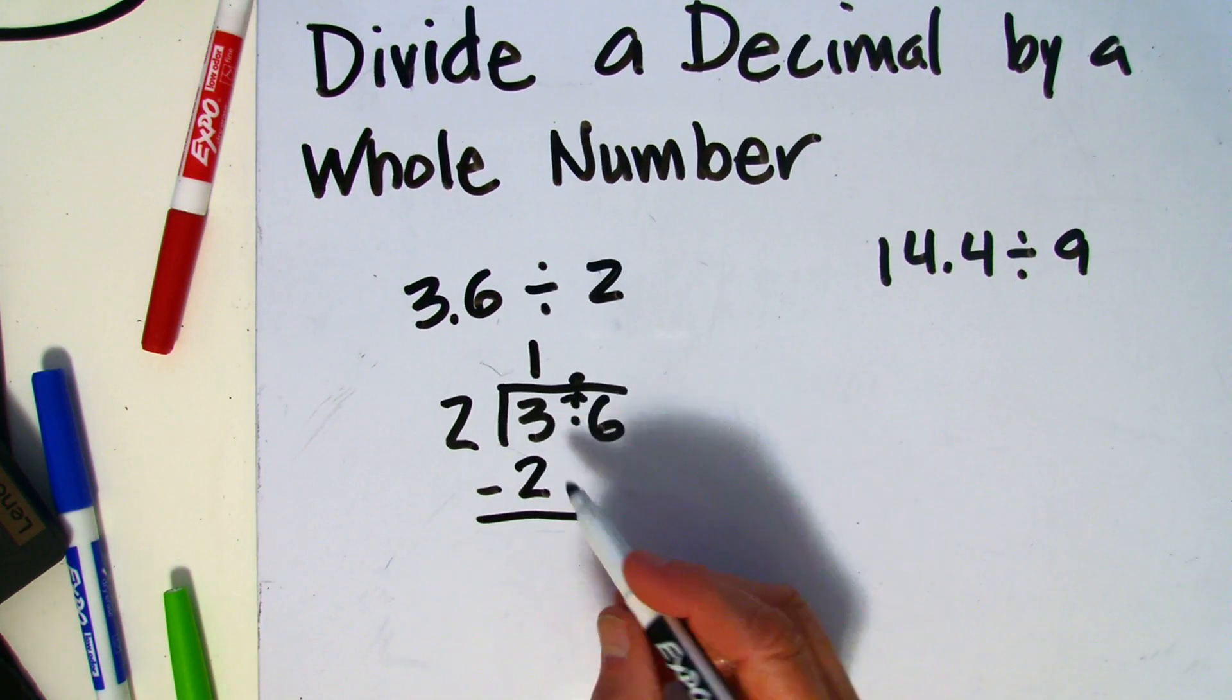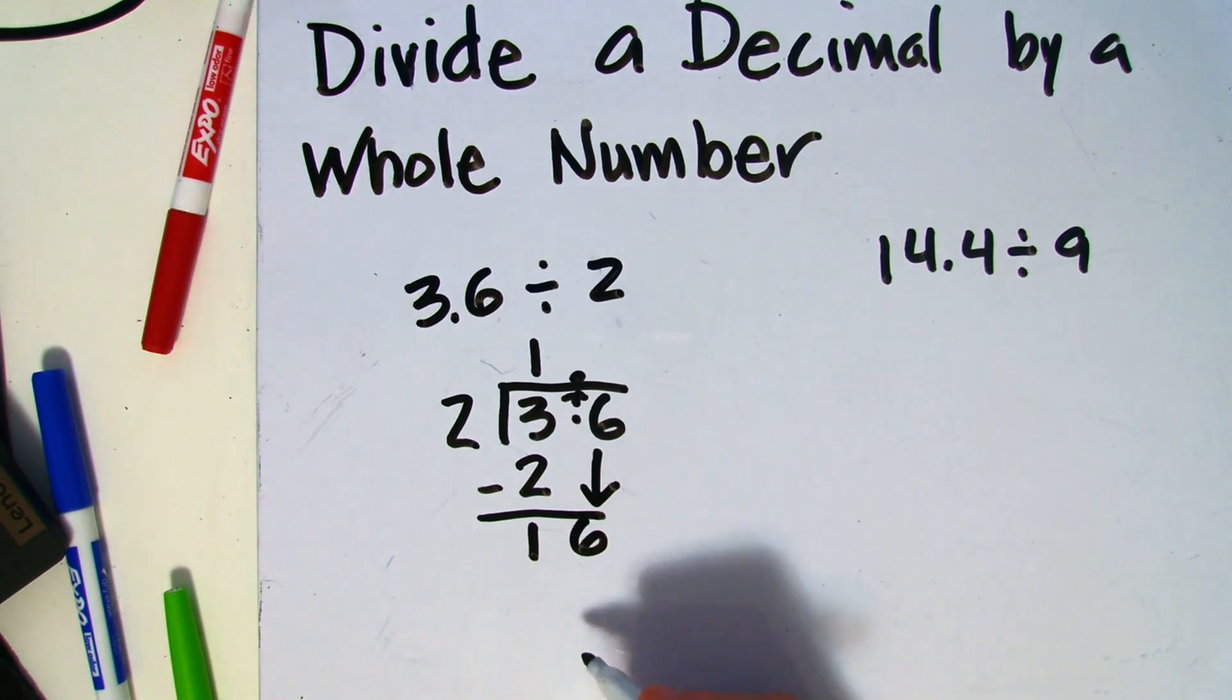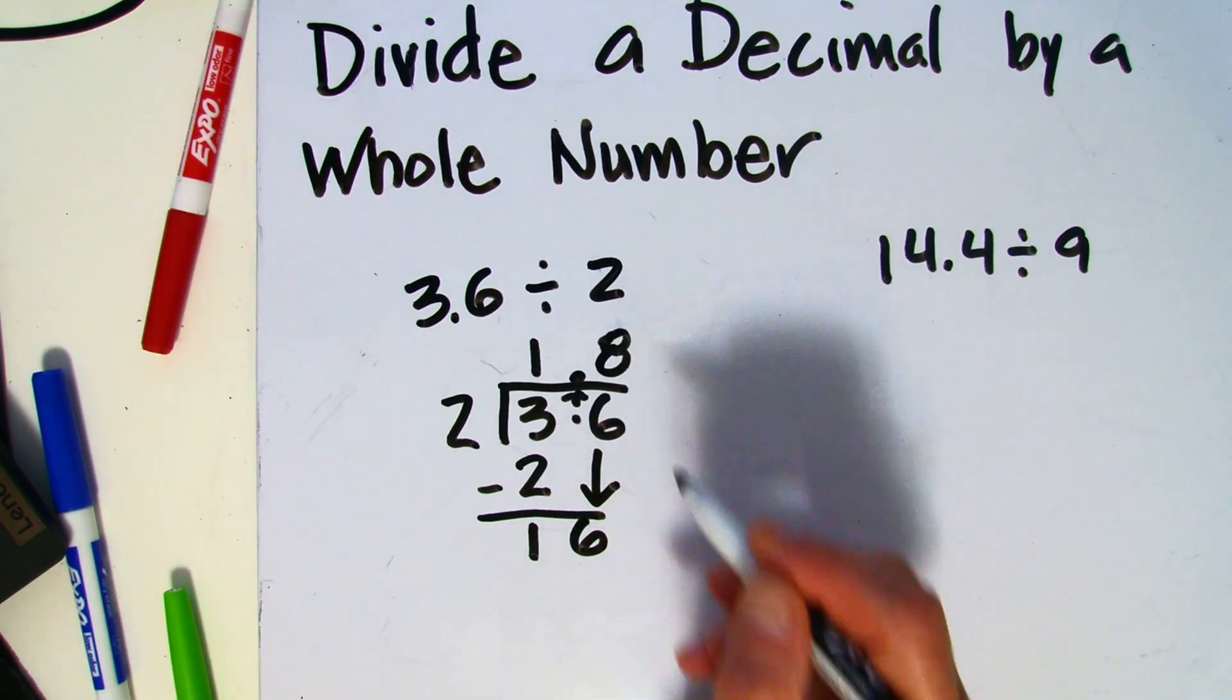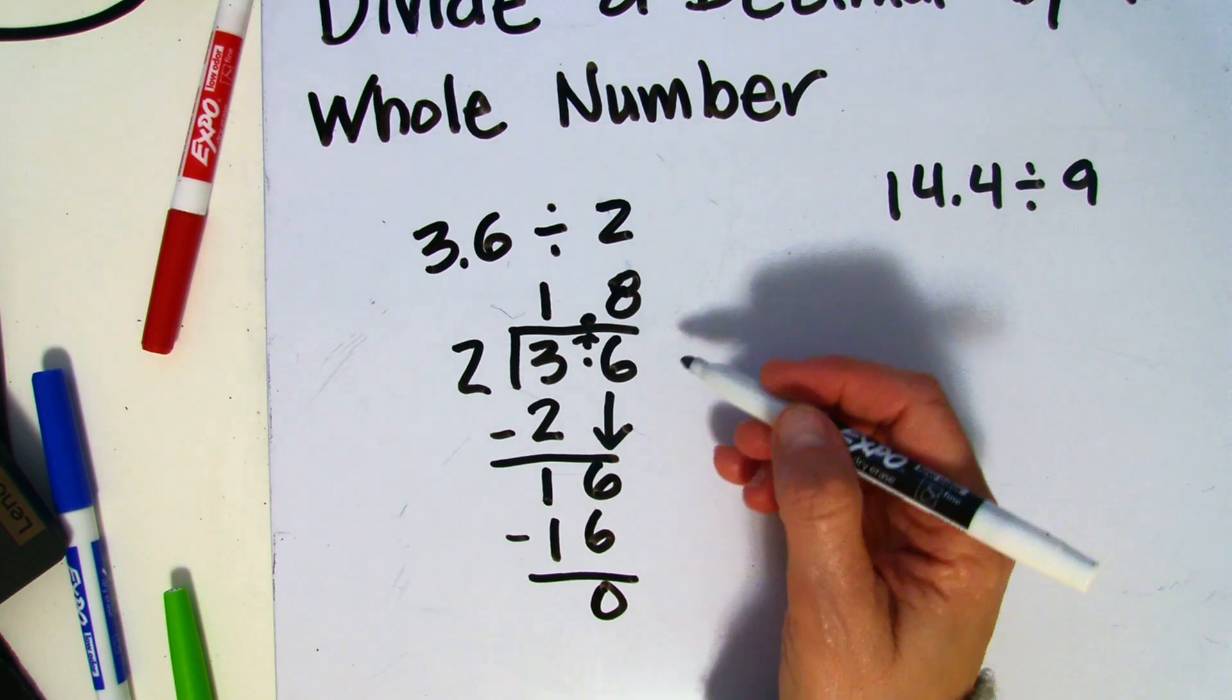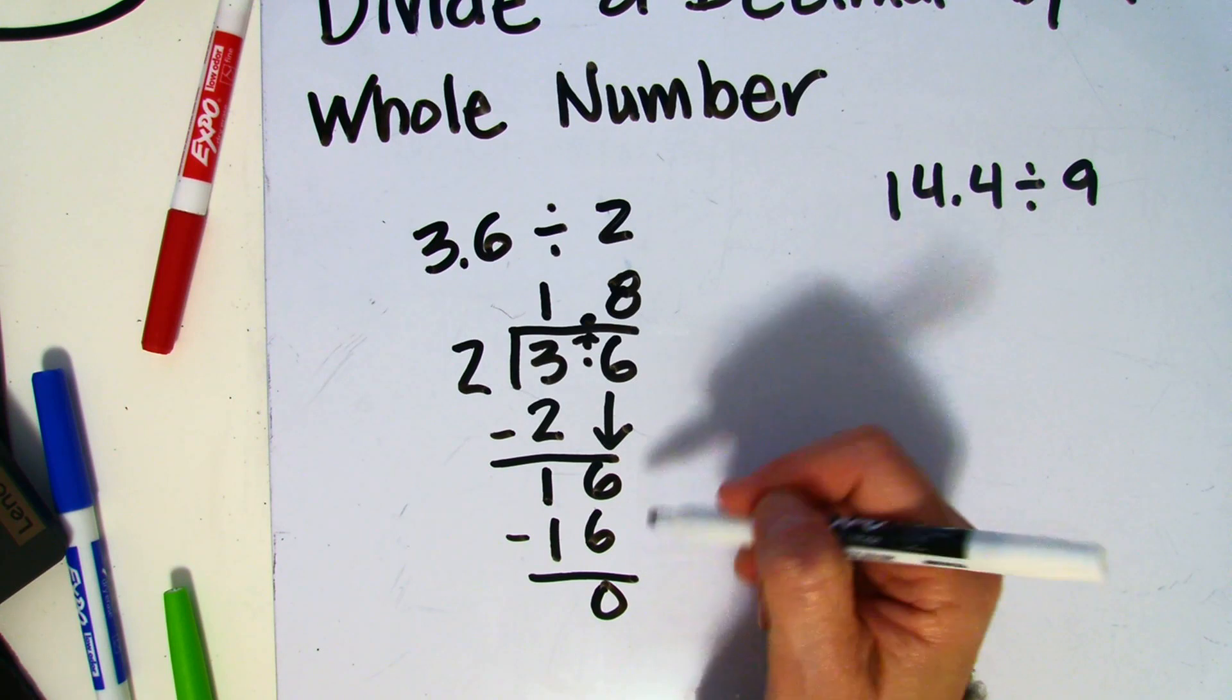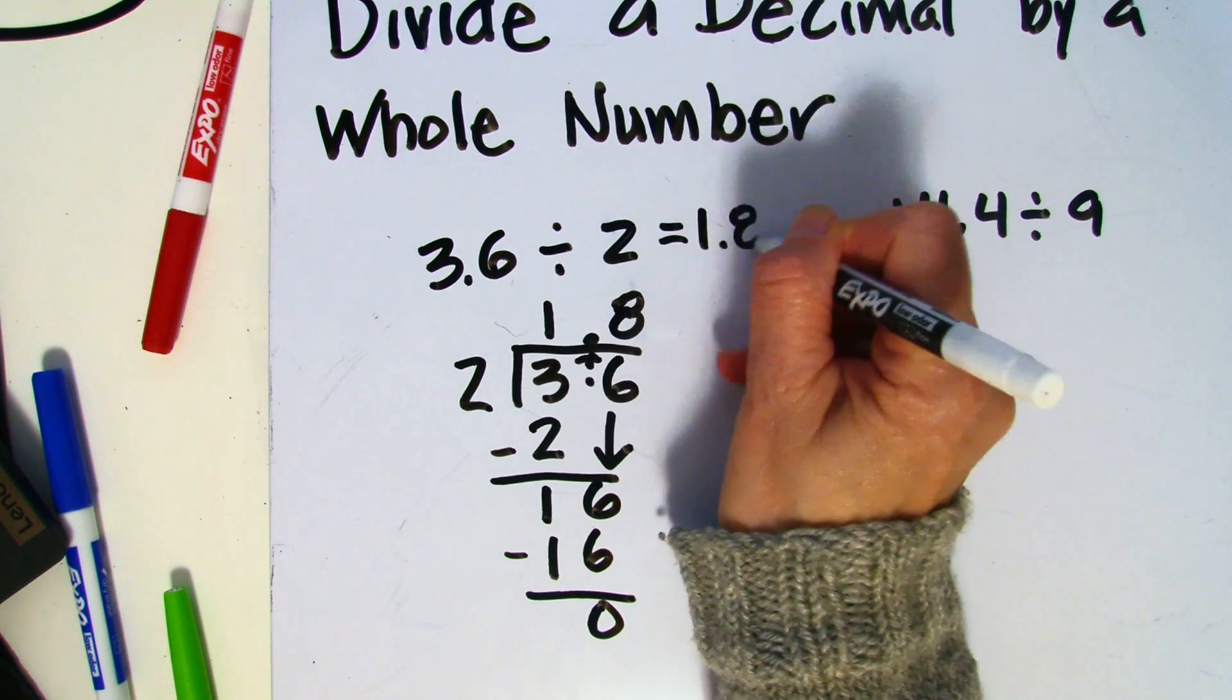And like with whole numbers, I'm going to find the difference and bring down the next digit. 2 goes into 16 exactly 8 times, so I'm going to bring up that 8. 8 times 2 is 16, and my difference is 0. Now because there are no other digits after this 6, I'm going to be done with the calculation. My answer is going to be 1 and 8 tenths.